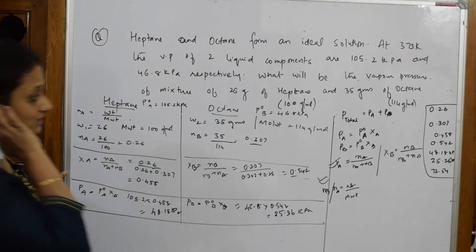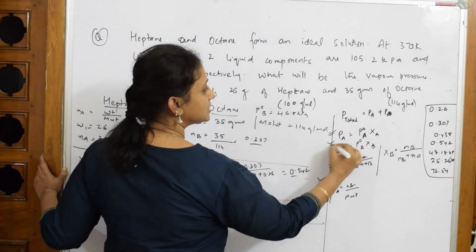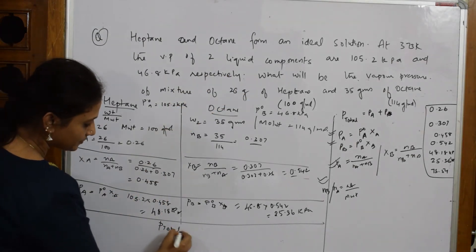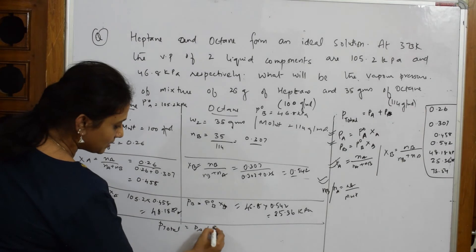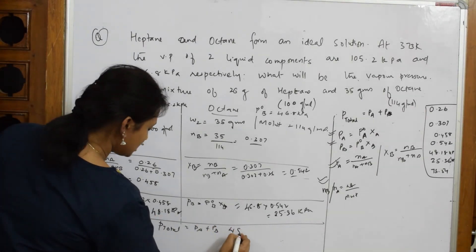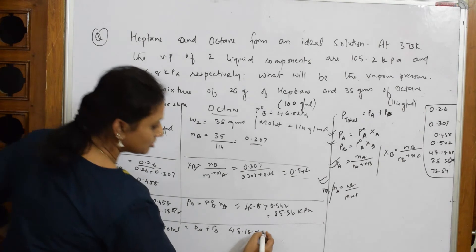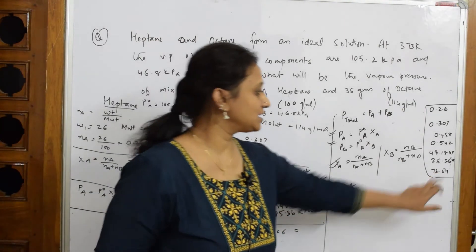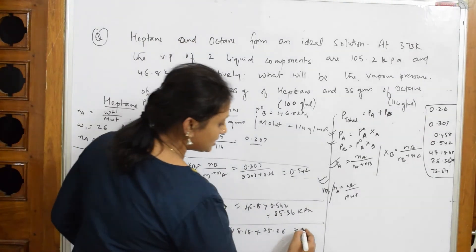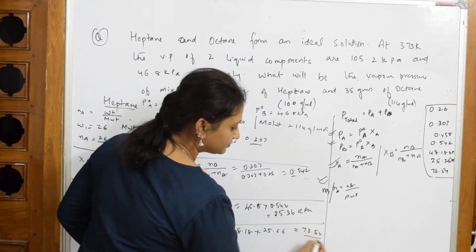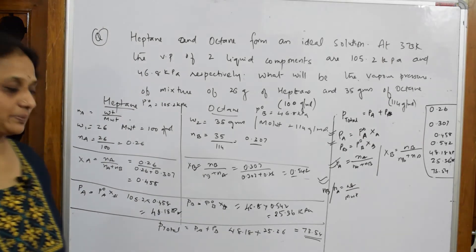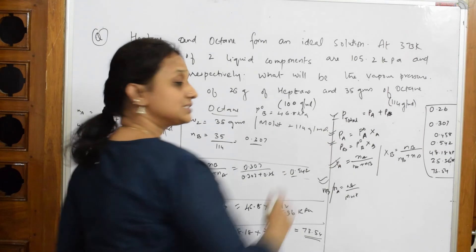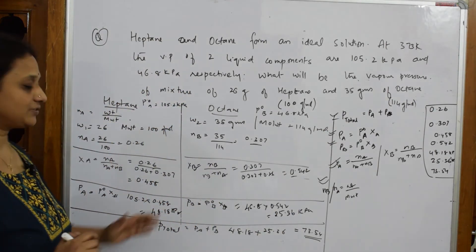P total I can calculate, isn't it? This is also over. Let's come back and calculate P total. That is what they have asked me to do. P total is equal to PA plus PB. PA I got it as 48.18 plus your 25.36. When I add this, finally, I get an answer of 73.54. That is your total vapor pressure. Do it systematically. Write what formulas are required. See what is given to you and finally finish the answer.